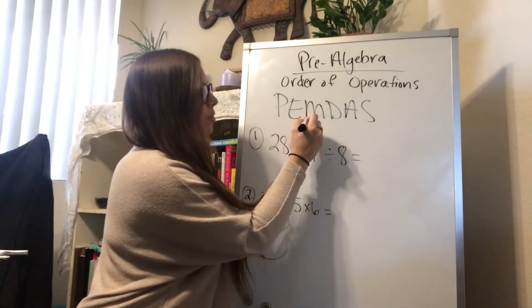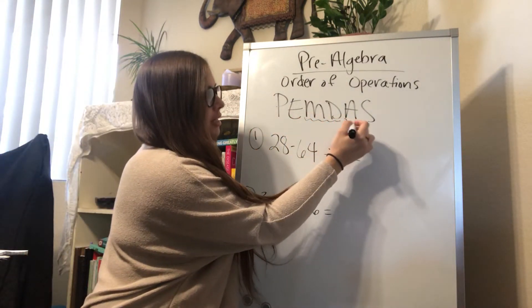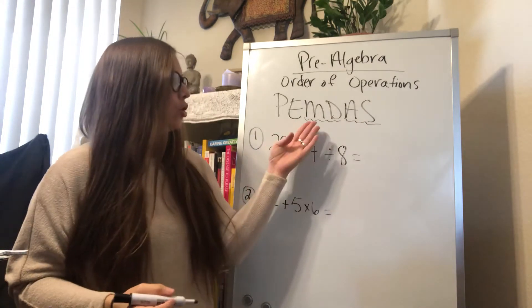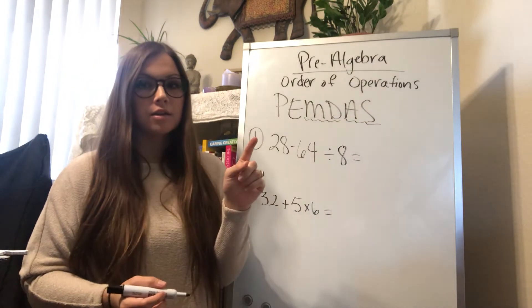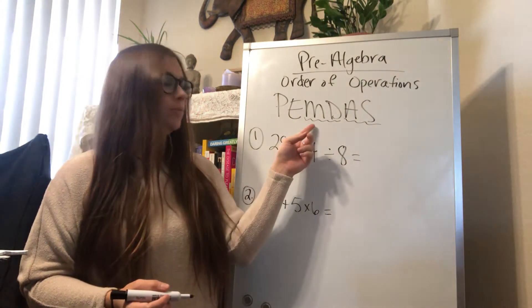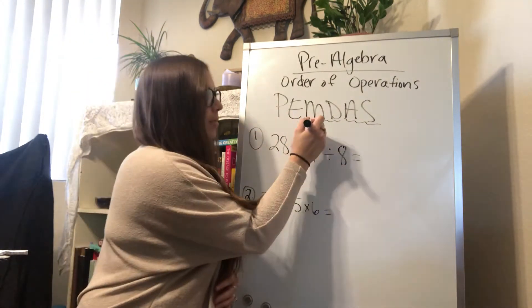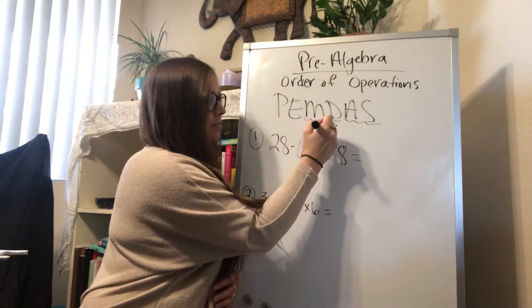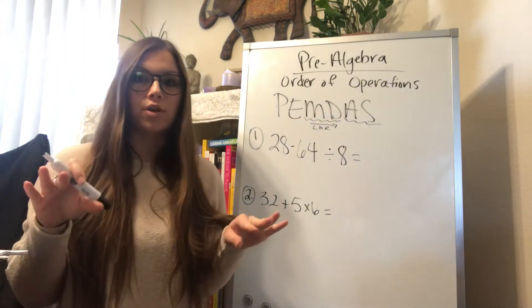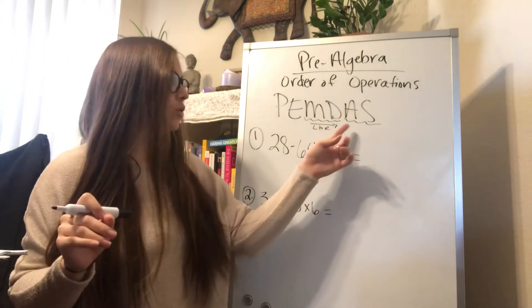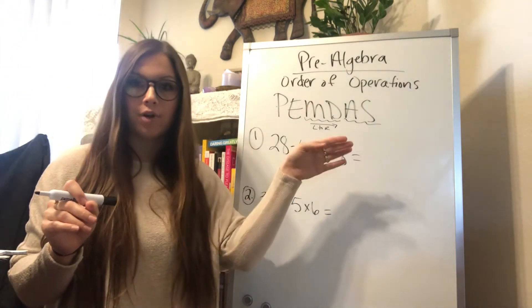A couple things to remember about multiplication and division and addition and subtraction. You have to do multiplication and division before you do addition and subtraction, but you can divide and multiply in order from left to right. And the same thing for addition and subtraction. As long as there are no other operations to be done, you can add and subtract from left to right.